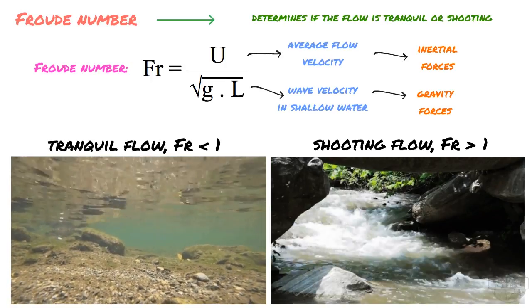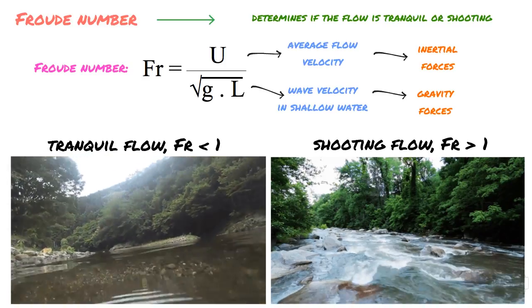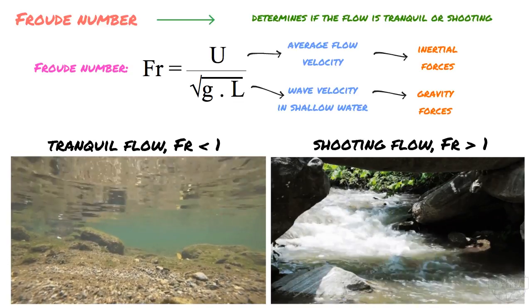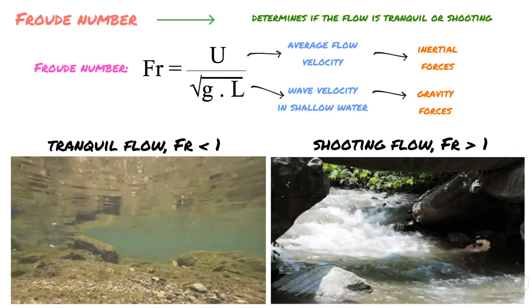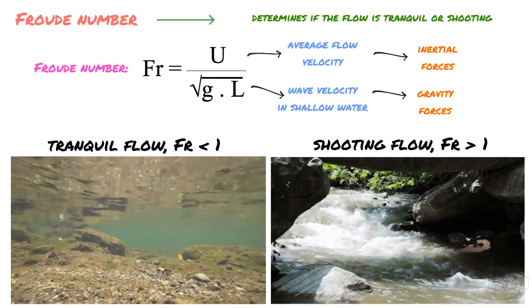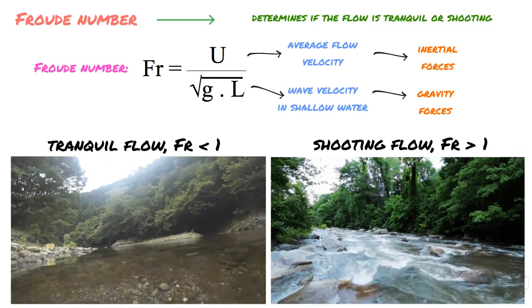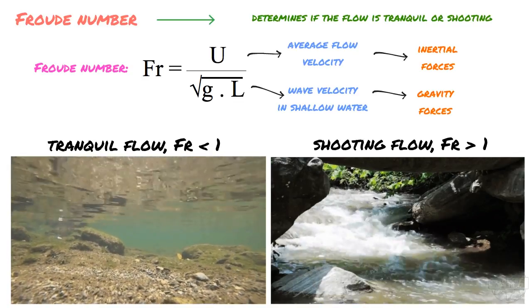Now, if you throw that same pebble into a shooting flow of water, like the one on the right, with a flow number greater than 1, the waves will not be able to travel upstream because the velocity of the stream becomes greater than the speed at which the waves move. For instance, a transition from lower to higher flow numbers may occur when a tranquil flow, moving over a relatively flat surface, turns into a shooting flow, moving over a steep slope.